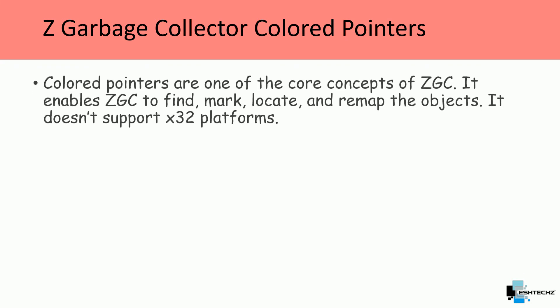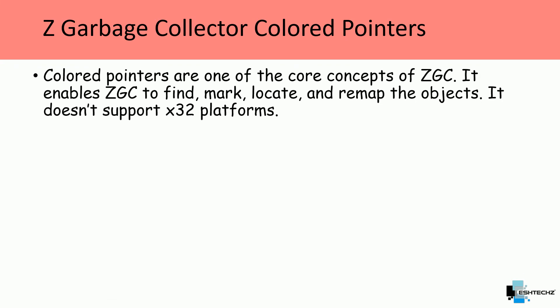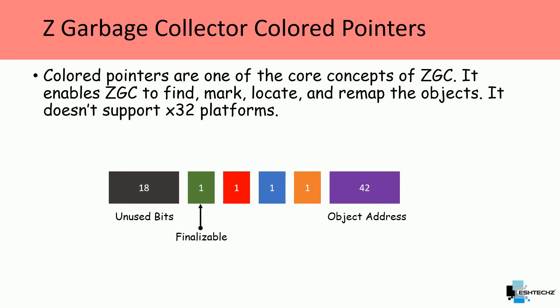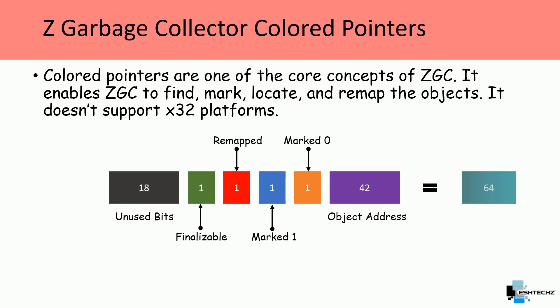Colored pointers are the core concept of ZGC, enabling it to find, mark, locate, and remap objects. ZGC does not support 32-bit platforms because its pointer layout uses 64 bits: 18 bits unused, 42 bits for object address, 1 bit for finalizable, 1 for remapped, 1 for marked 1, and 1 for marked 0 — totaling 64 bits. That is why ZGC requires a 64-bit platform.